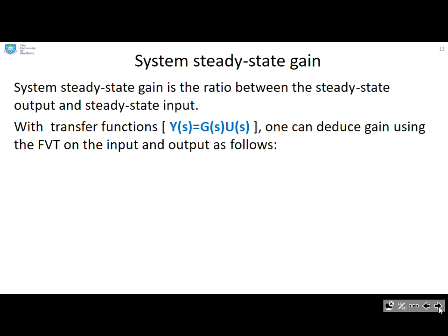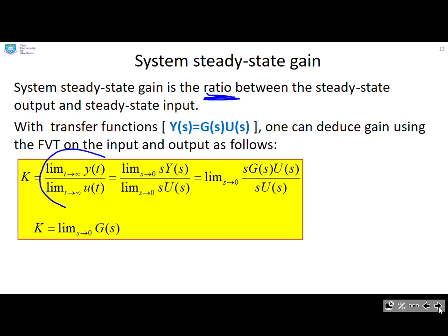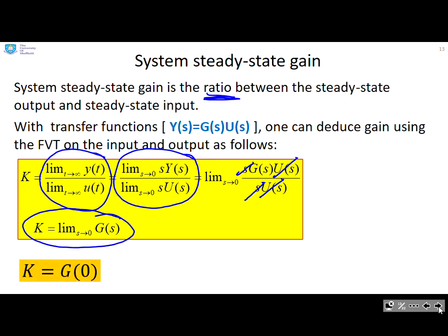What about systems? There's a concept of system steady state gain. System steady state gain is the ratio between the steady state output and steady state input. We can actually deduce this using the final value theorem as follows. You can see what we're interested in is the asymptotic ratio between the output and the input, the limit as t goes to infinity of y divided by the limit as t goes to infinity of u, but both of those can be solved using the final value theorem. If I plug in all the numbers, what you'll notice is I've got a u in both the numerator and denominator and s in both the numerator and the denominator. So the formula reduces to this, steady state gain is just defined as g of zero, which is nice and simple to compute.